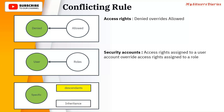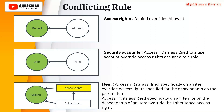You have a specific item, access descendants, and inheritance. The specific access will always get precedence over a descendant, whereas descendants will get precedence over inheritance, and specific will always have the highest precedence. Access rights assigned specifically on an item override access rights specified for the descendant on the parent item. Access rights assigned specifically on the item or on the descendants of an item override the inheritance access right.